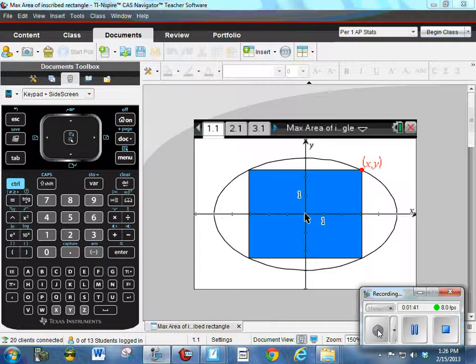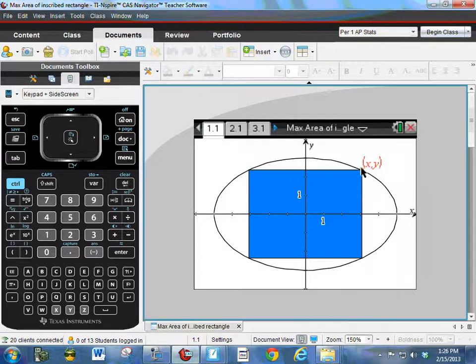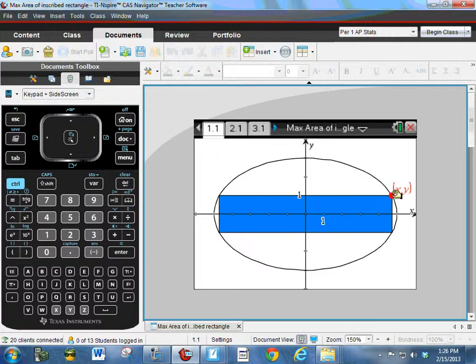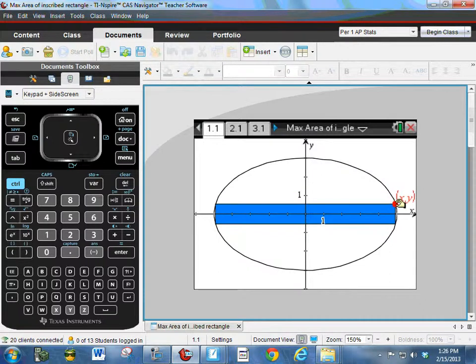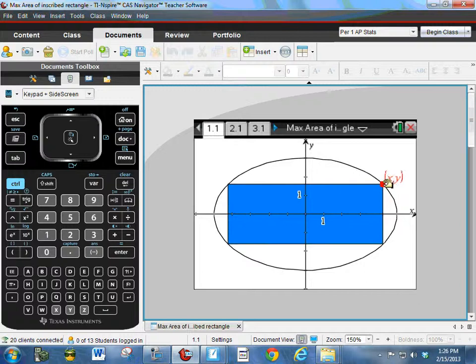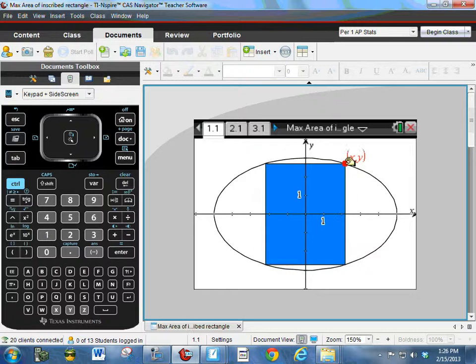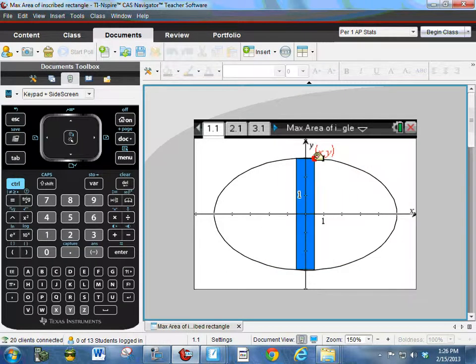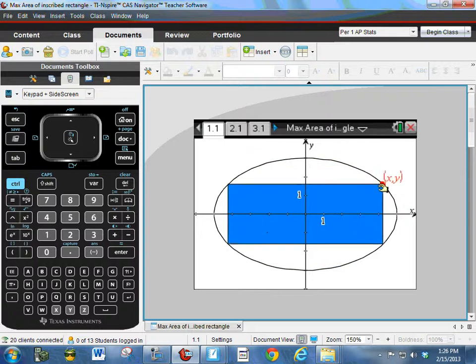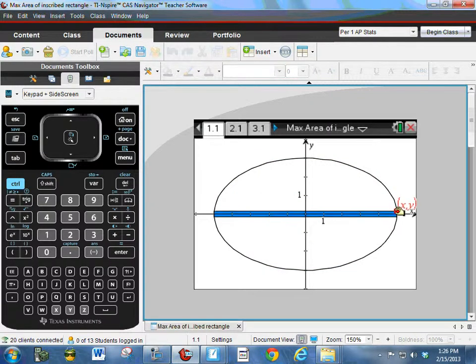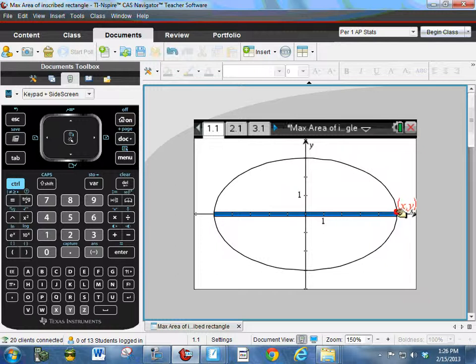We have here an inspire file that has a rectangle inscribed in an ellipse. And so I'm going to show what can happen if we move the point XY around. So we could make a really small thin strip of a rectangle here. Kind of like a narrow box here. As we move the point XY around we can get a box that is more square in dimensions and then we can have a tall skinny box. What would happen if I move the point all the way down to the X axis? What would the area of the box be?